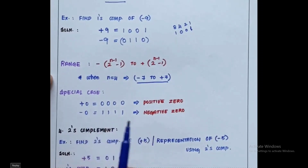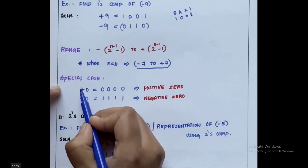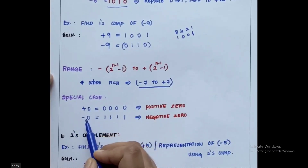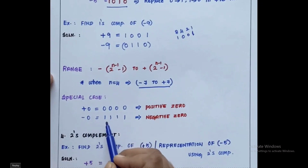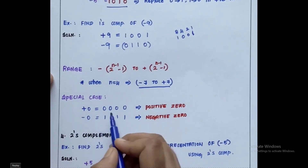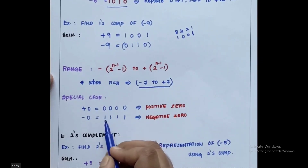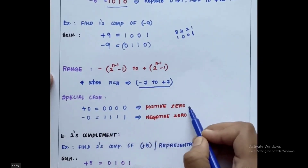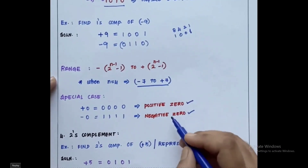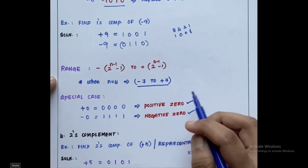Now the special case: when it is plus 0, we represent it as four 0's — 0000. Taking the 1's complement gives 1111, which represents negative 0. So there is a difference between positive 0 and negative 0 in 1's complement — positive 0 is entirely 0's and negative 0 is entirely 1's.